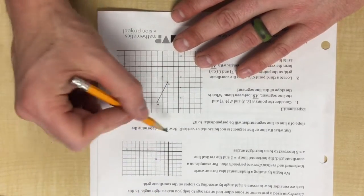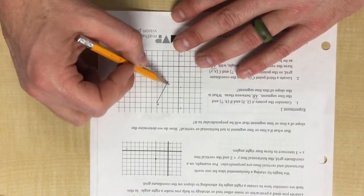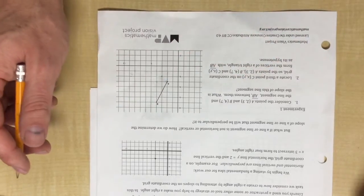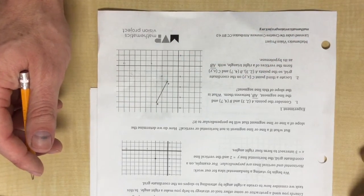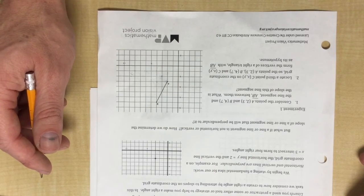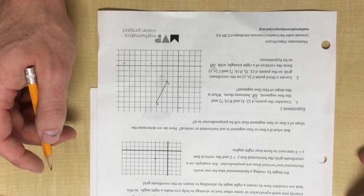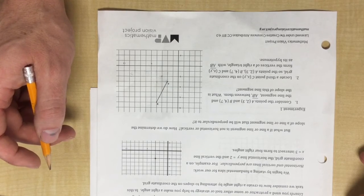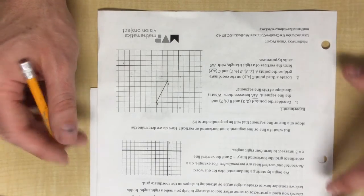But when you have a line that is not horizontal and vertical, which most lines aren't, we talked about last week how to spot the line that is perpendicular to it by looking at the two slopes. So I'm just going to jump right into experiment one here.